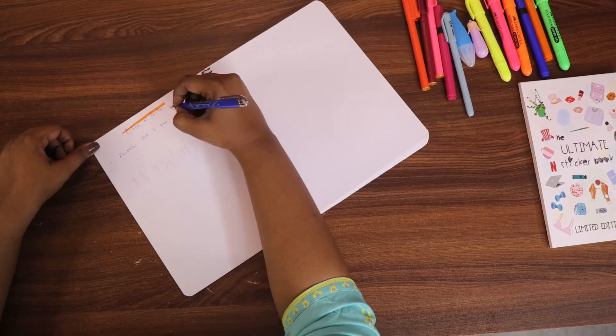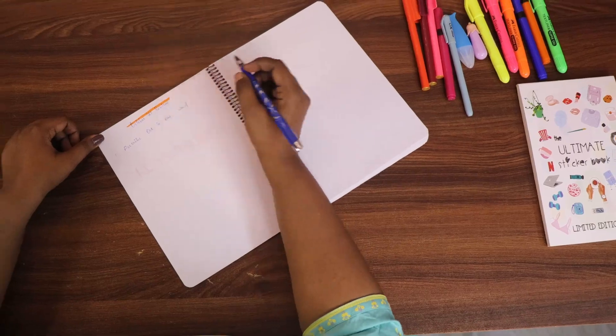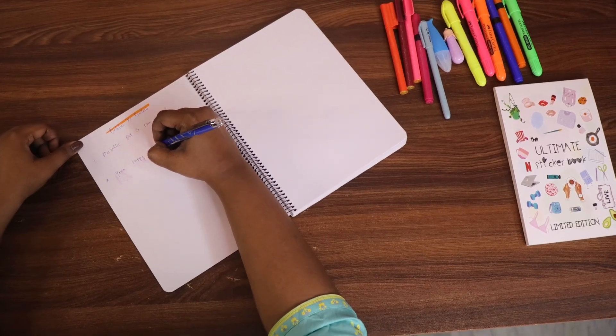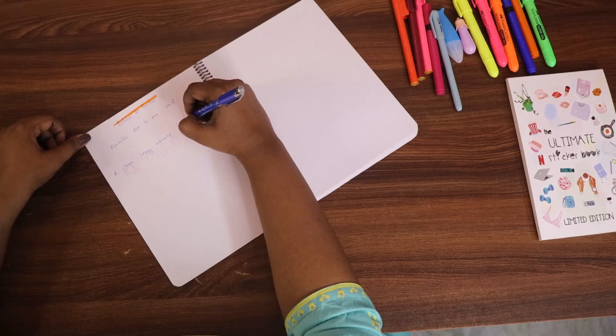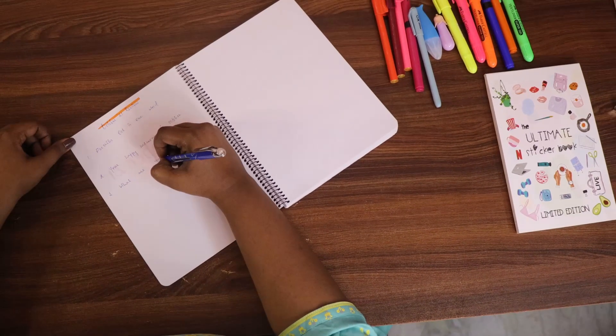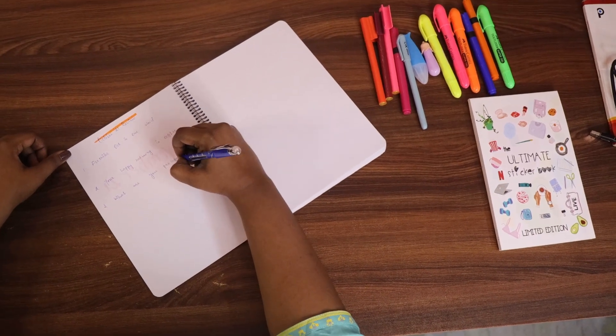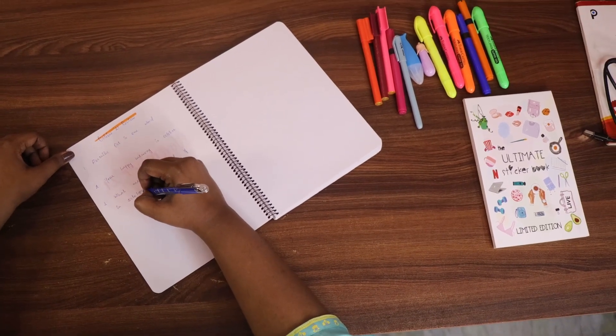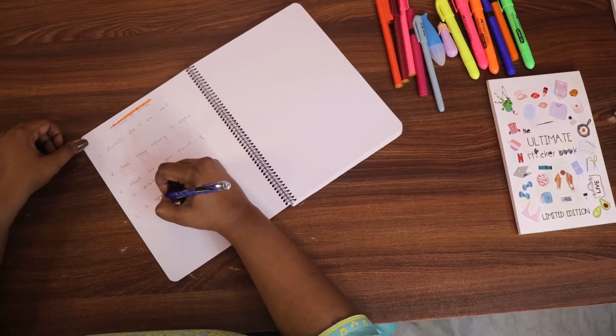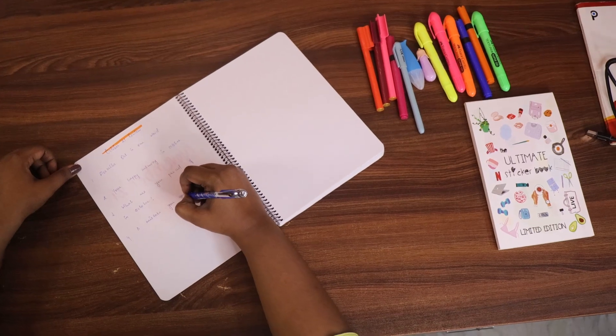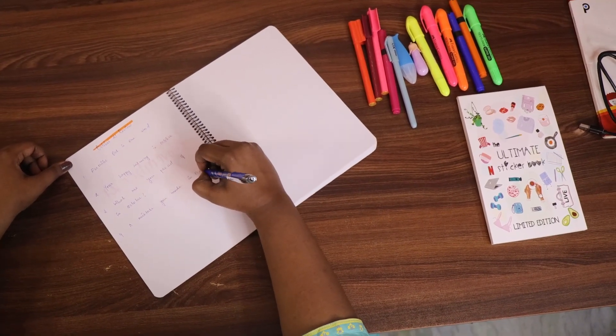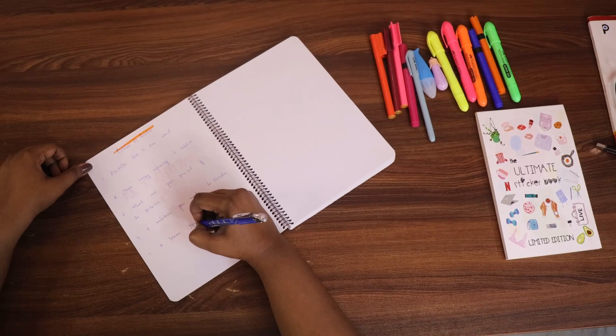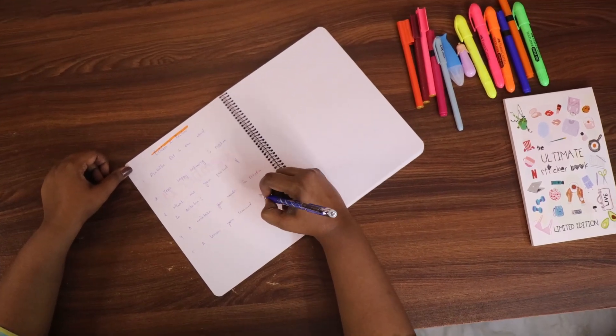I start by answering these questions so I can reflect on my previous month. Describe October in one word. Your happy memory in October. What are you proud of in October? A mistake you made in October. A lesson you learned in October. How can I improve in the next month?